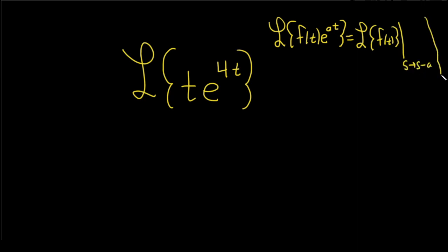So this is a super powerful formula that will allow us to do many, many problems. So let's apply it here. Here we have a t. That's going to be our f of t, and you see we have e to the 4t, so you see that a is 4 in this case.